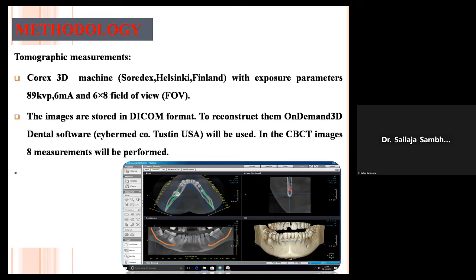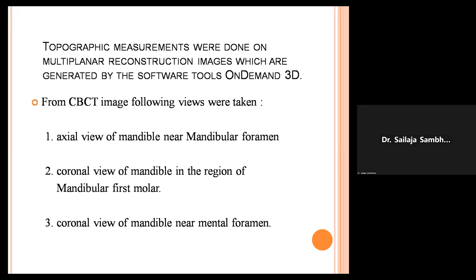For methodology, a 4D 3D machine for CBCT was used and images were stored in DICOM format. To reconstruct them on demand, 3D dental software was used. In the CBCT images, 8 measurements were performed. From the CBCT image, the following views were taken: axial view of the mandible near the mandibular foramen, coronal view of the mandible in the region of the mandibular first molar, and coronal view of the mandible near the mental foramen.